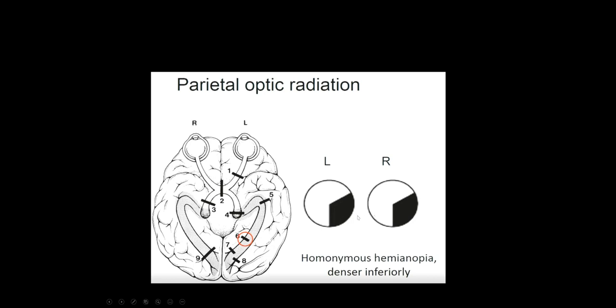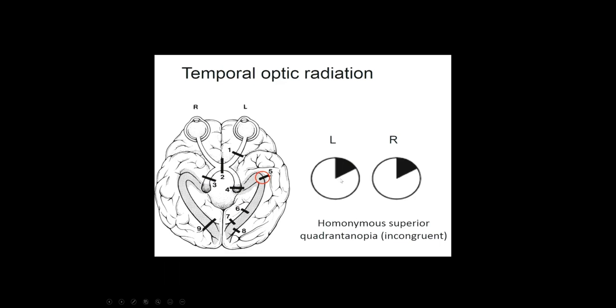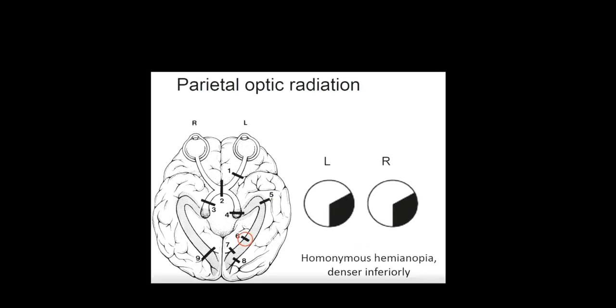Notice the visual deficits are equal side to side with both of these. Once we get behind the optic tract and into the optic radiations, basically the further back you go, the more likely the visual field deficits will be perfectly equal and symmetrical side to side.